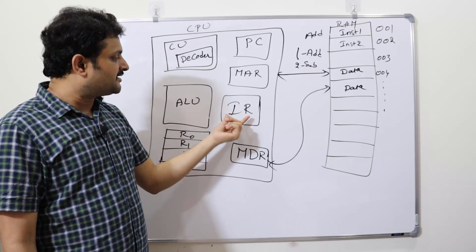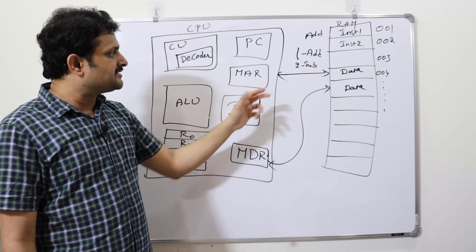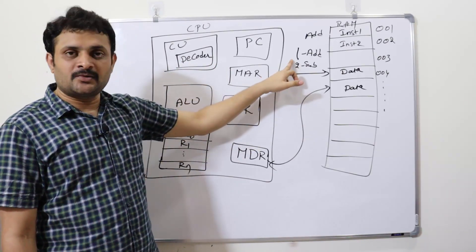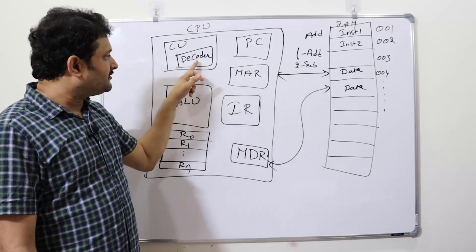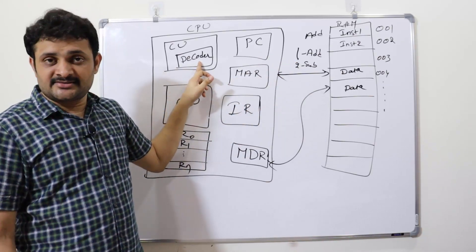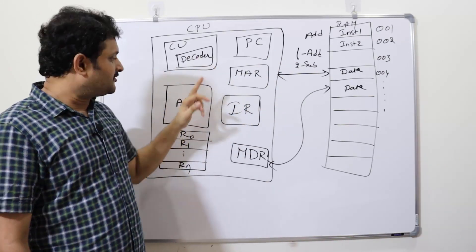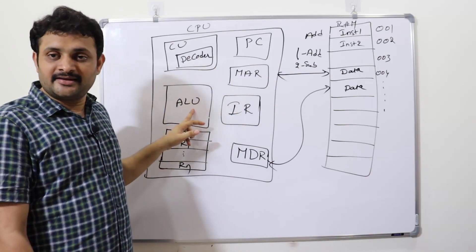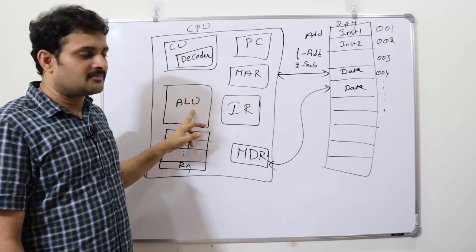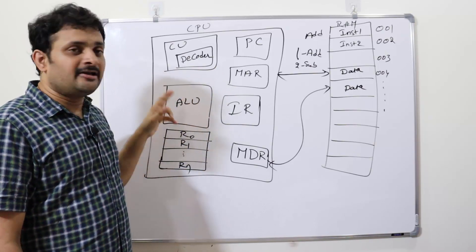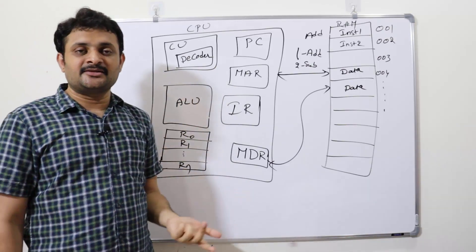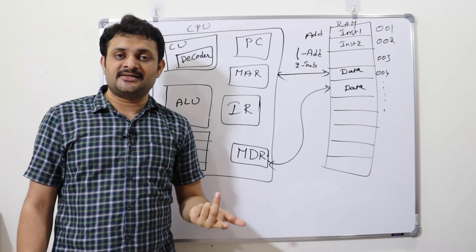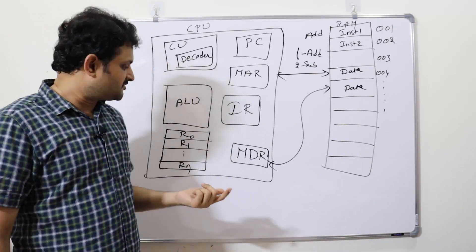For example, the IR receives a code of '1'; the decoder identifies code '1' and instructs the ALU to perform the corresponding operation. The ALU then performs either arithmetic or logical operations.